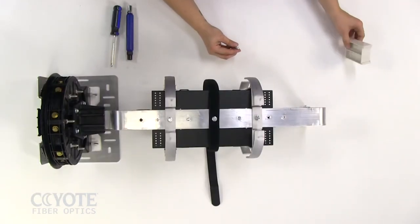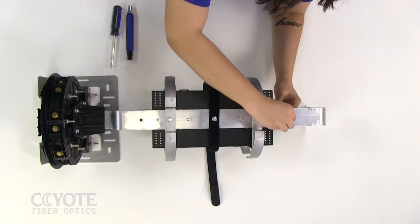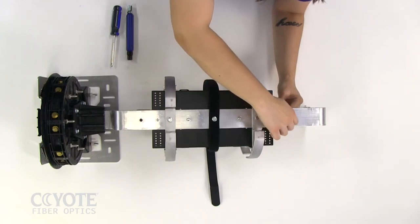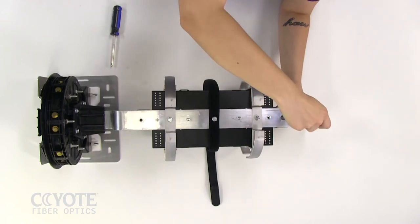Flip the organizer assembly and install the slack basket spacer to the organizer bar using a lock washer and a bolt. Tighten with the can wrench.